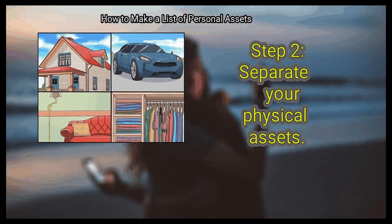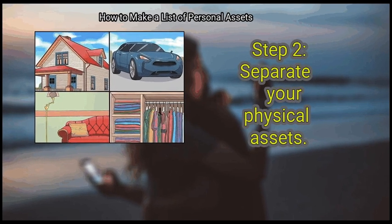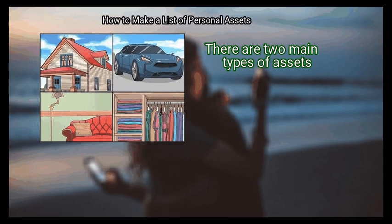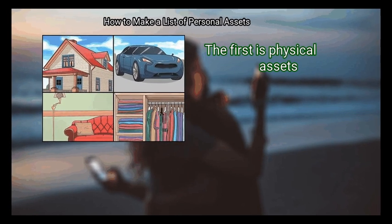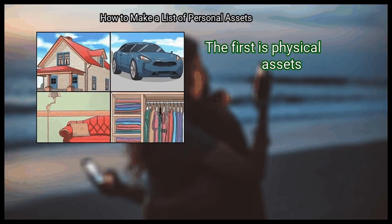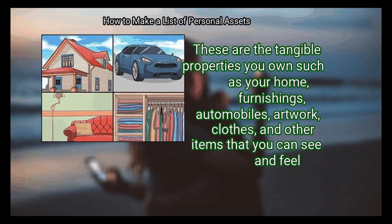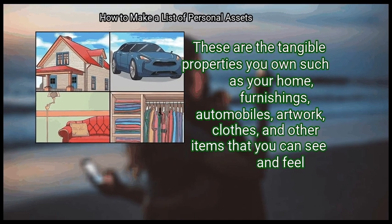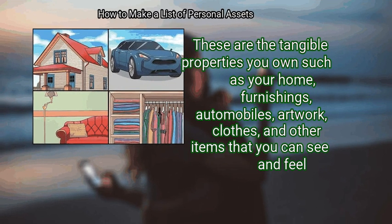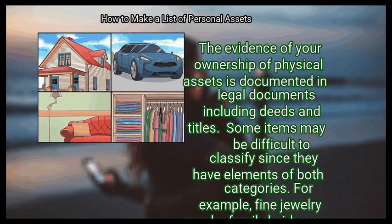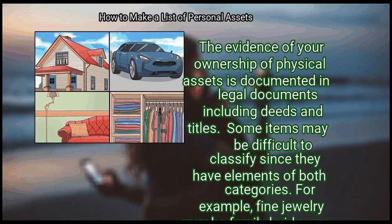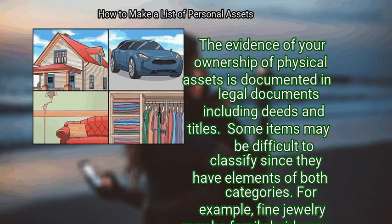Step 2: Separate your physical assets. There are two main types of assets. The first is physical assets. These are the tangible properties you own such as your home, furnishings, automobiles, artwork, clothes, and other items that you can see and feel. The evidence of your ownership of physical assets is documented in legal documents including deeds and titles.